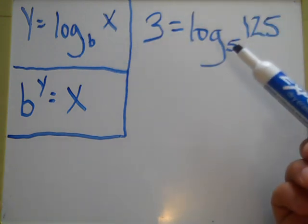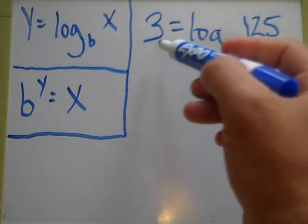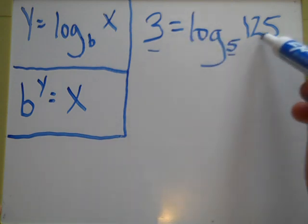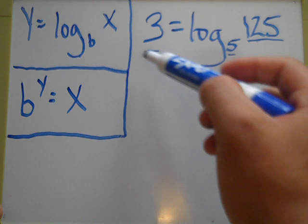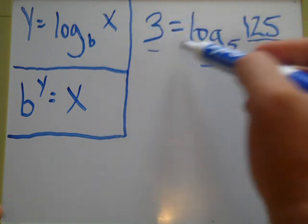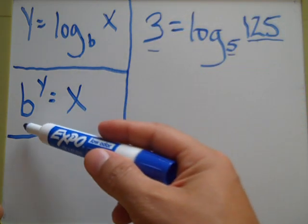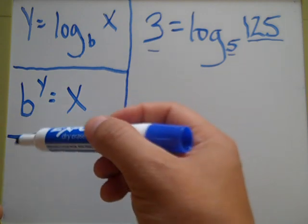They look similar, because basically what you're doing is plugging in these values right here. Well, if you know that that's y, that's b, and that's x, all you've got to do is switch them around. Rearrange them.